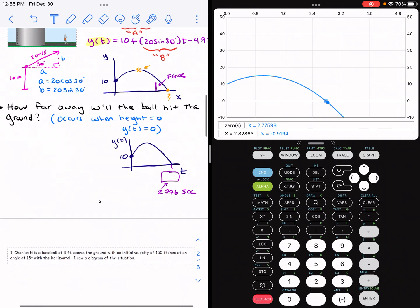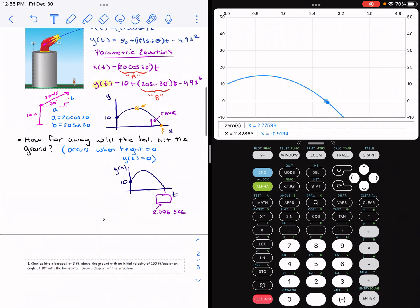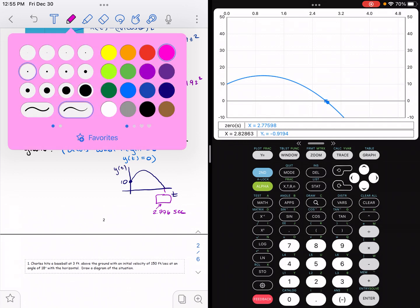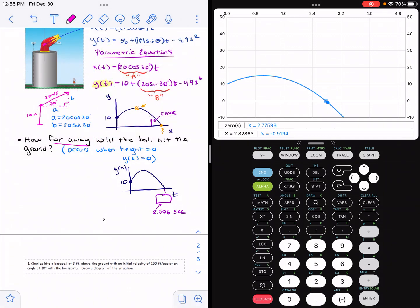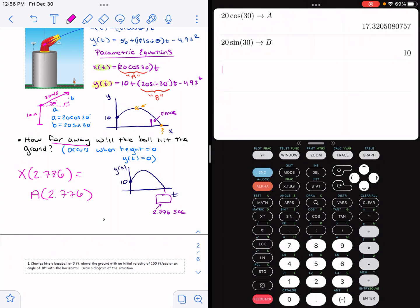If you look at the question though, it says, how far away will the ball be when it hits the ground? So that's a horizontal distance, right? So we need to plug this time value into our horizontal equation. So I'm going to do x of 2.776. I need to know the horizontal position at that time. So that's just going to be a, the thing I stored as a, times 2.776. So I go back to my screen here, and I do a times 2.776. I press enter, and it's going to be about 48.08 meters away.